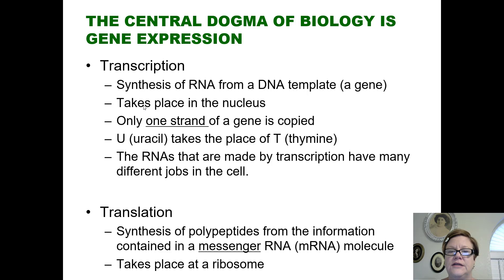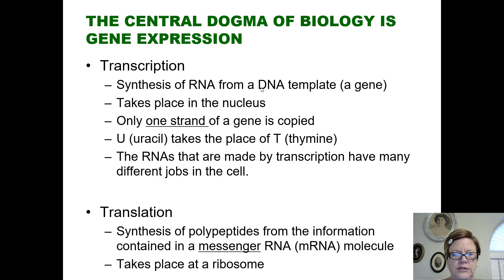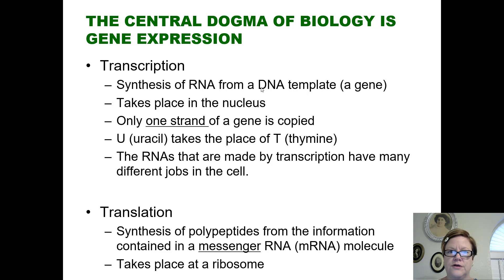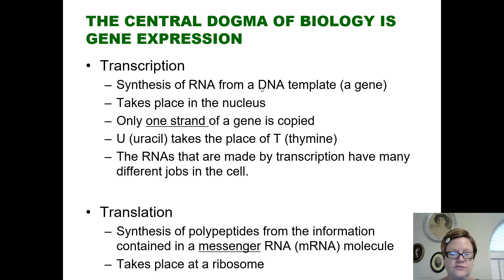The copying in a eukaryotic cell takes place in the nucleus. Each transcription event is only copying one gene. There could be 1,200 genes on a single human chromosome, so it's just one section of a chromosome that's copied. There's a part of the chromosome that marks where the copying needs to start and where this gene ends — start and stop signals at the beginning and end of the gene.